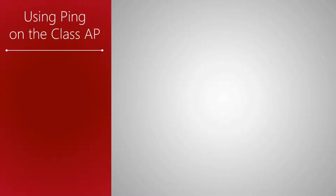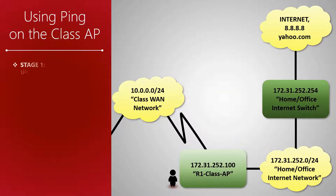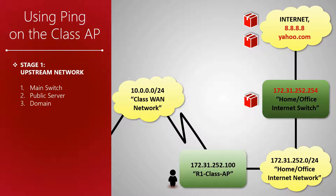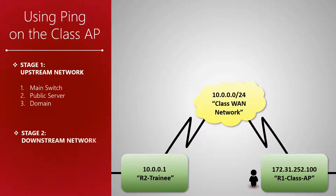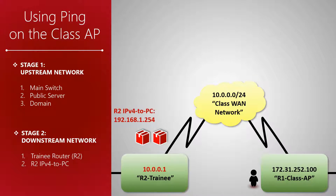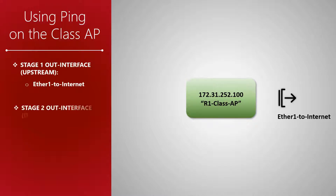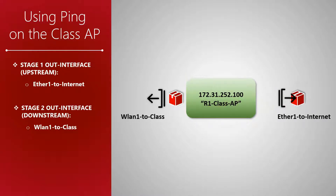As per our network diagram, we will first send ping packets to our upstream neighboring device — the main internet switch — as well as an address and a domain to check our internet connection on the class AP. These three addresses will be the destination addresses in our upstream network. Next, we will ping two destination addresses in our downstream neighboring device, which is the trainee router. On the class AP we have two out interfaces: the upstream out interface is ether one, and the downstream out interface is WLAN one.